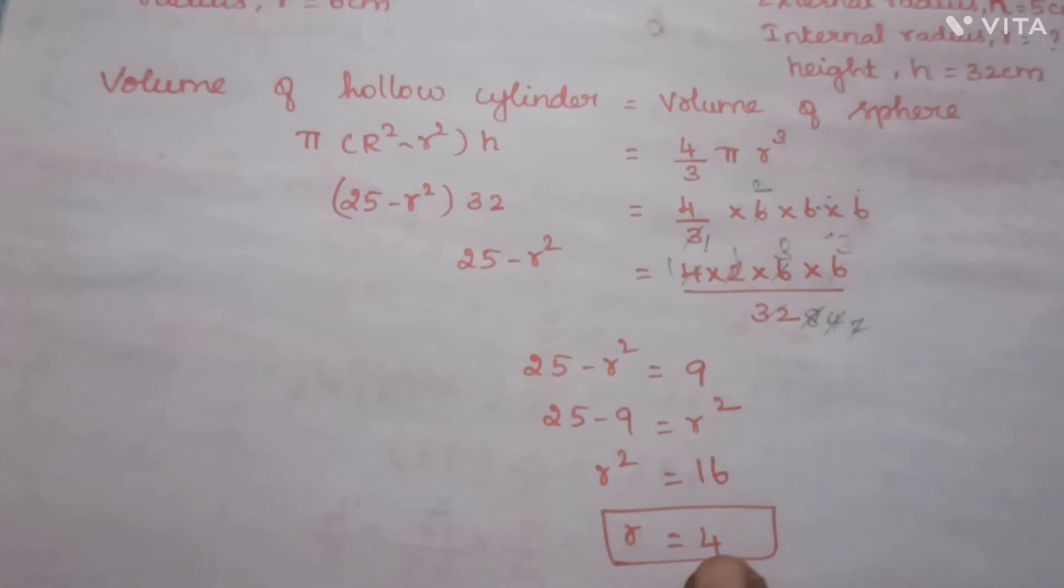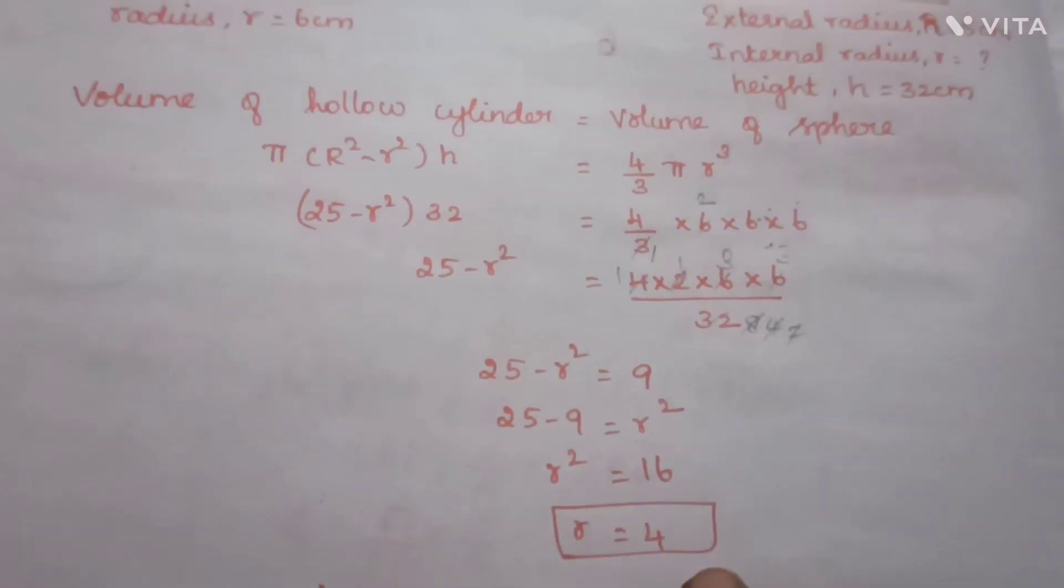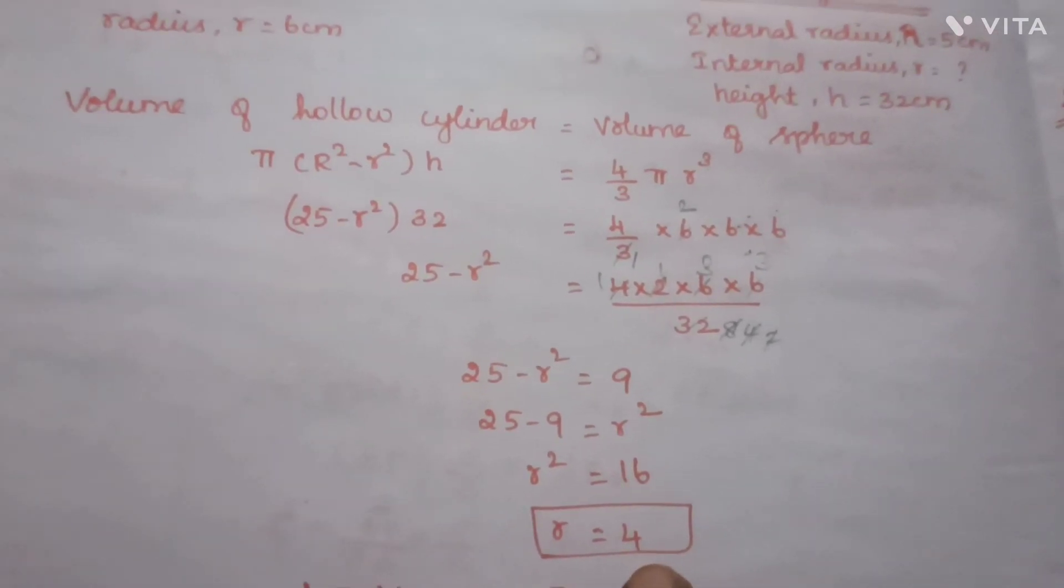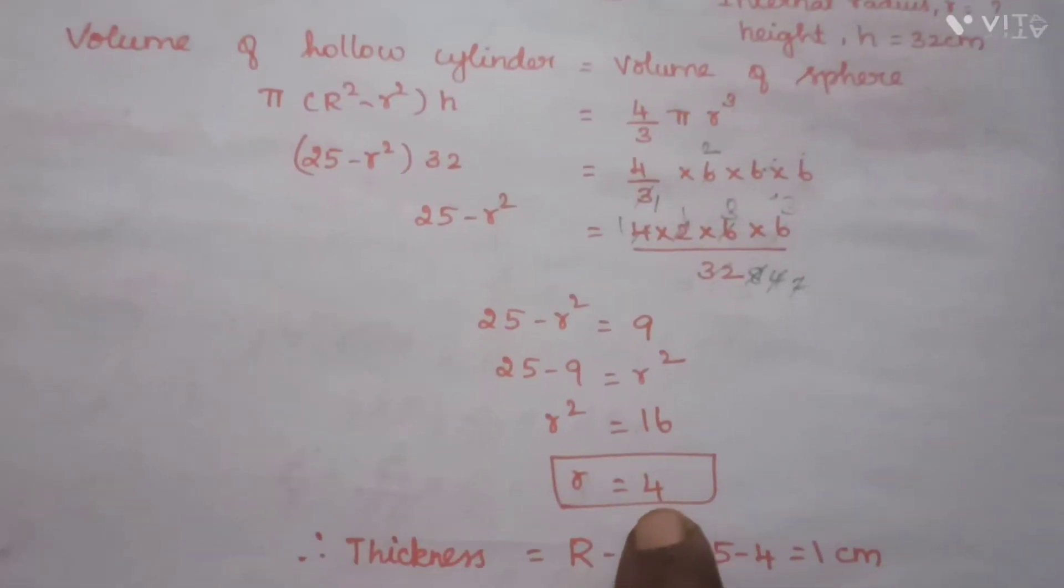So r is the square root of 16, which is 4. The internal radius small r is equal to 4 centimeters.